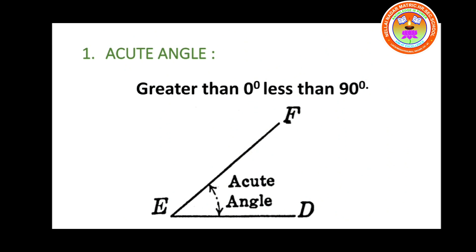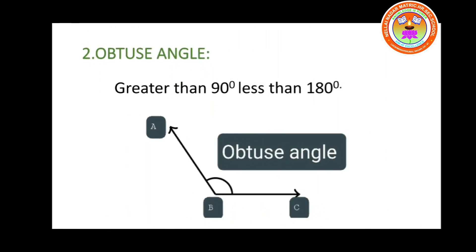What is acute angle, children? Greater than 0 degree, less than 90 degree is called an acute angle. Second one — obtuse angle — greater than 90 degree, less than 180 degree is called an obtuse angle. Here the angle B represents an obtuse angle. Angle A, B, C. That is, greater than 90 and less than 180. For example, 100 degree, 110 degree, 120 degree. So these degrees represent an obtuse angle. Greater than 90 degree, less than 180 degree.